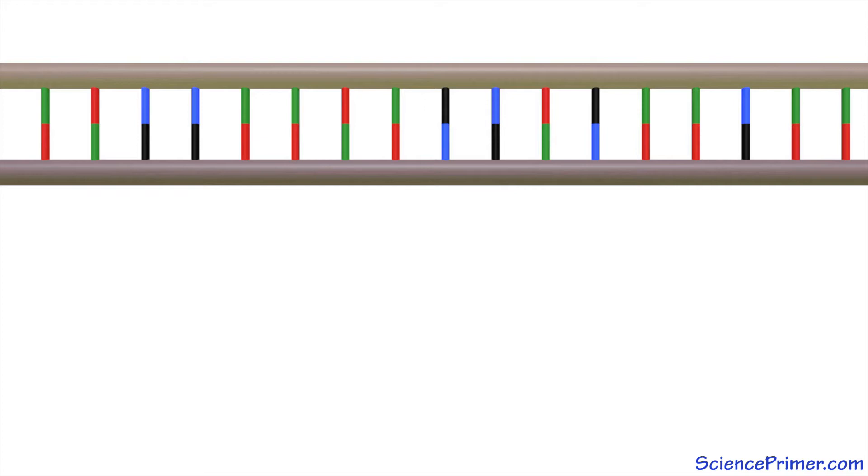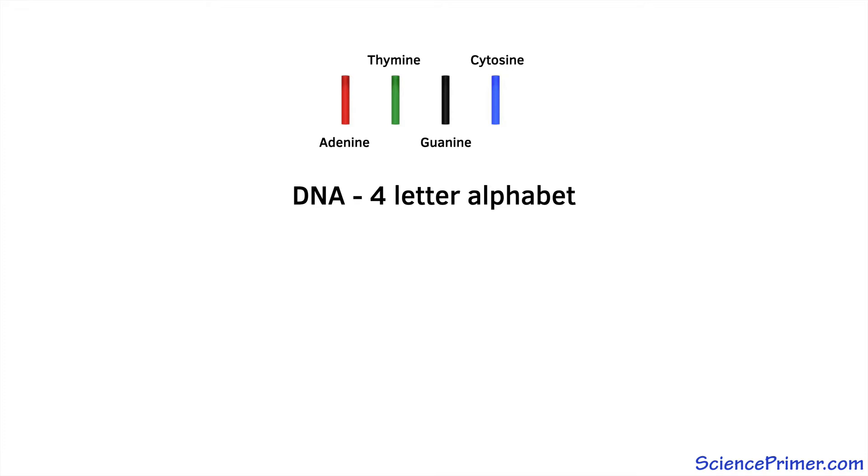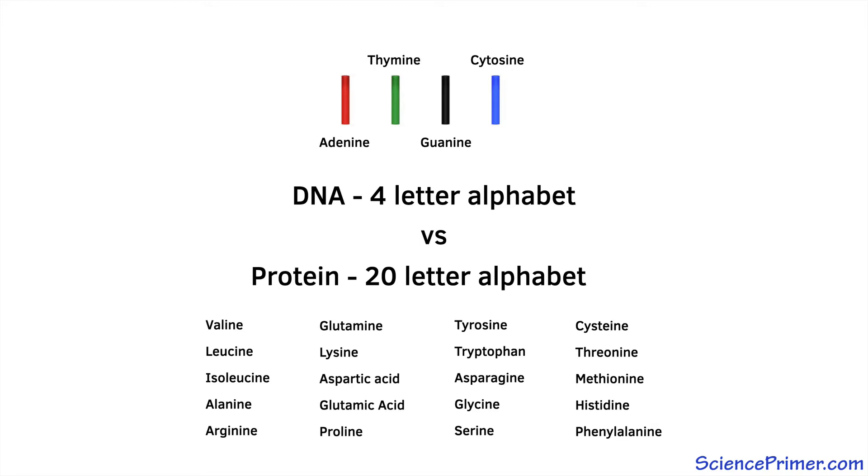DNA had been discovered back in the mid-1800s, but it took almost 100 years from its discovery for DNA's role in heredity to be understood. As recently as the 1940s, many scientists considered DNA an unlikely candidate to carry heritable information because it is a simple molecule made up of just four different nucleic acids, providing a very small four-letter alphabet with which to describe the diversity of life.